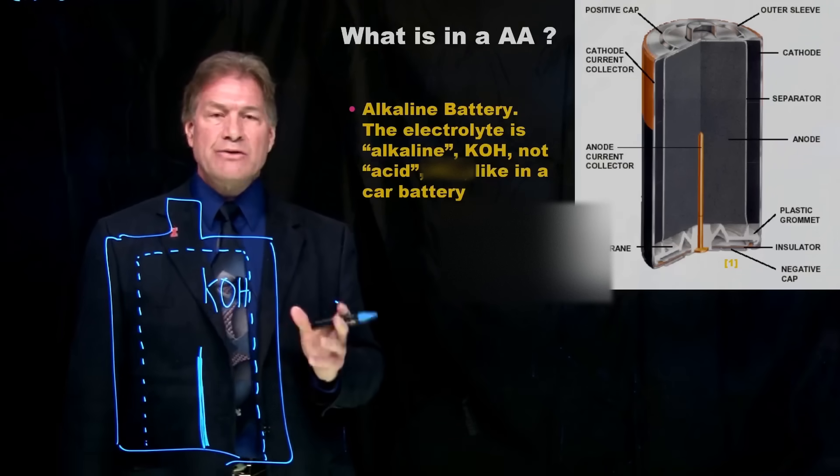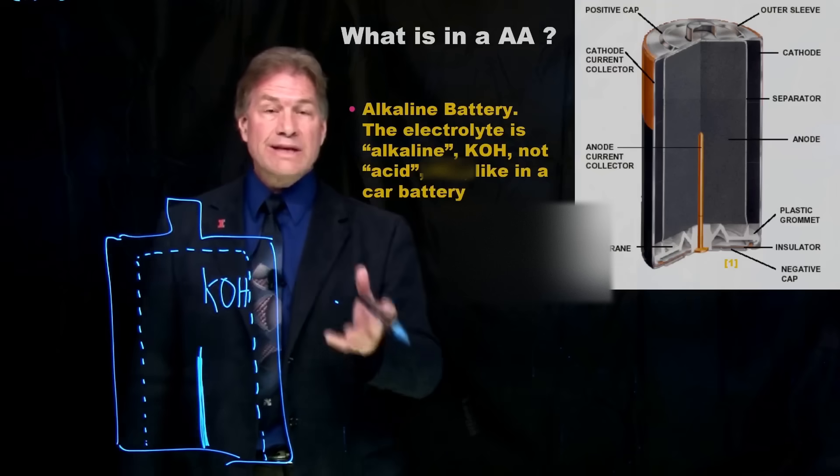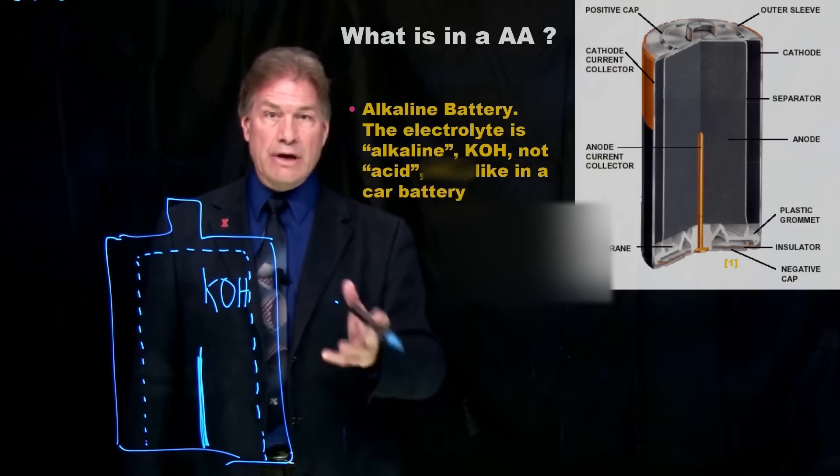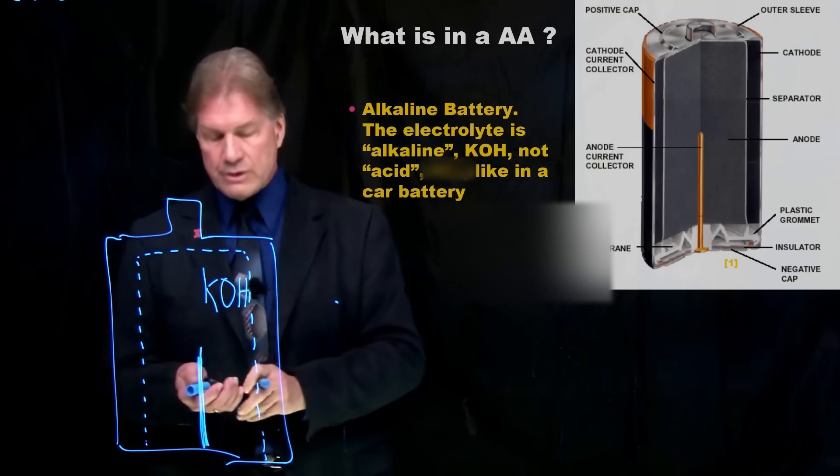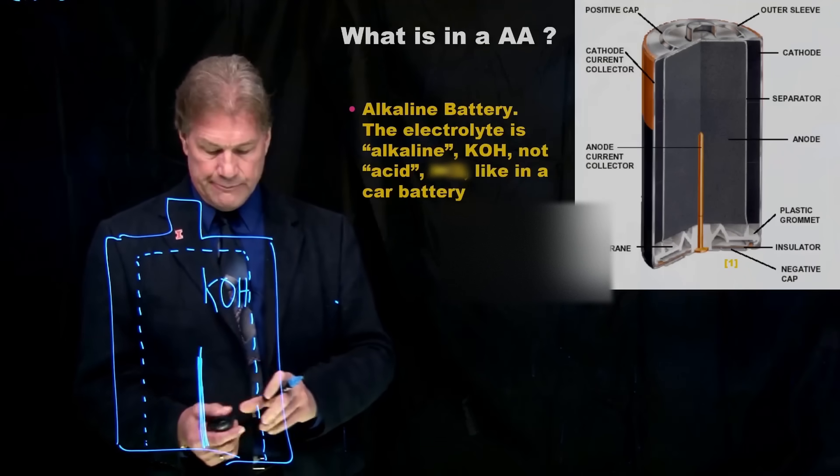These are called alkaline batteries because in here there's an electrolyte, potassium hydroxide. And that potassium hydroxide is not an acid. In your car, that's a lead acid battery. And the electrolyte is hydrochloric acid. So, this is why it's called an alkaline battery.